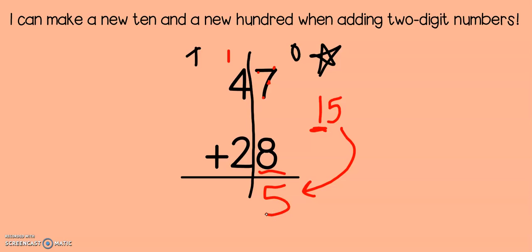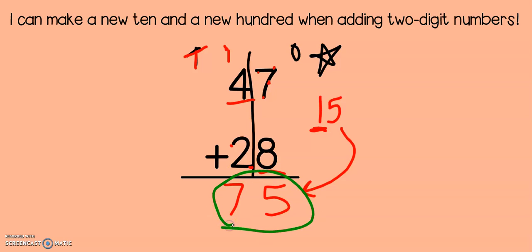Now I move next door and I count up my tens: 4, 5, 6, 7. In this problem, I did not make a new hundred, because I only had seven tens. So my final answer is 75.